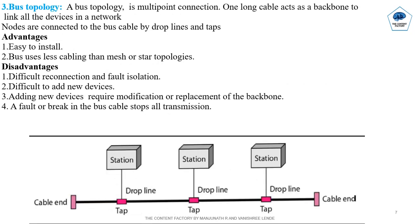Third one is Bus Topology. In bus topology, multipoint connections are used. One long cable acts as a backbone to link all devices in the network. Nodes are connected to the bus cable by drop lines and taps. Advantages: It is easy to install because all stations are connected to one backbone cable, and bus topology uses less cabling than mesh or star topology.